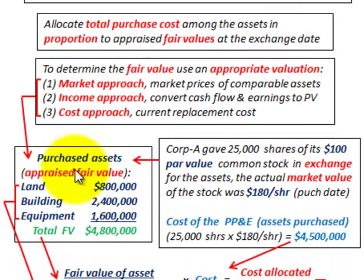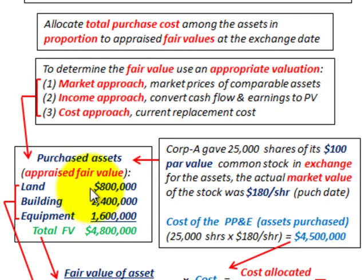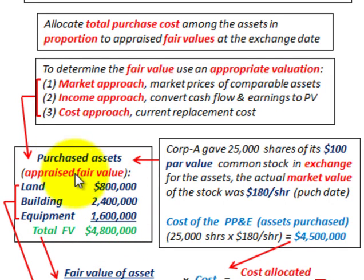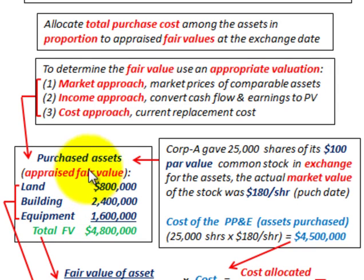Corporation A is going to have purchased some assets from either a company that's going out of business or a company that's selling off all its assets, and they're going to buy them for one lump sum price. So what we have to do is determine the appraised fair value of the assets individually that they're buying, and allocate them based on the cost that Corporation A is going to pay for the total lump sum of these assets.